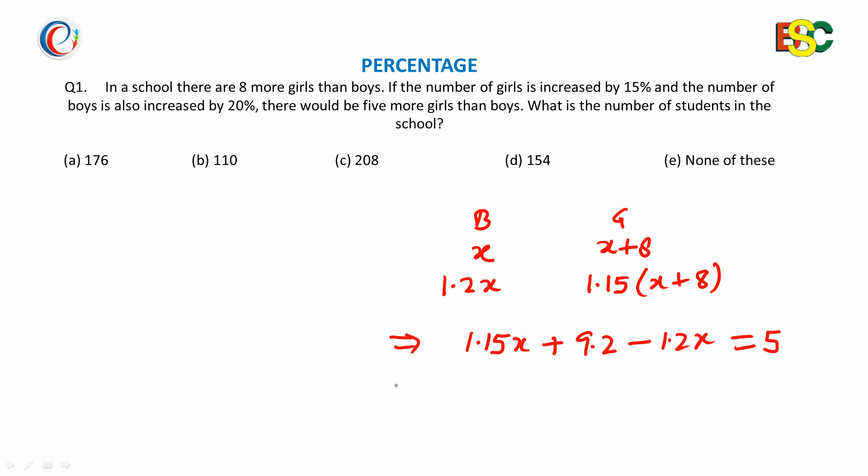Further we get 0.05x equivalent to 4.2, and therefore x is 84 when we divide 4.2 by 0.05.